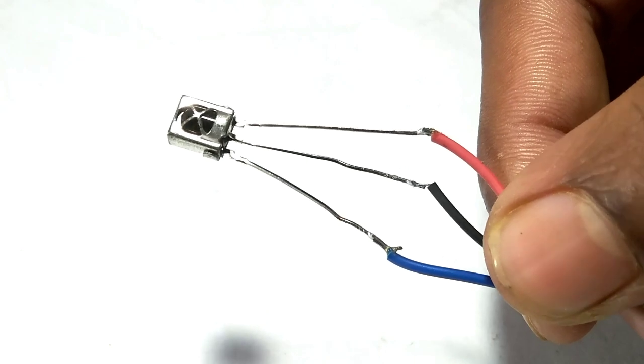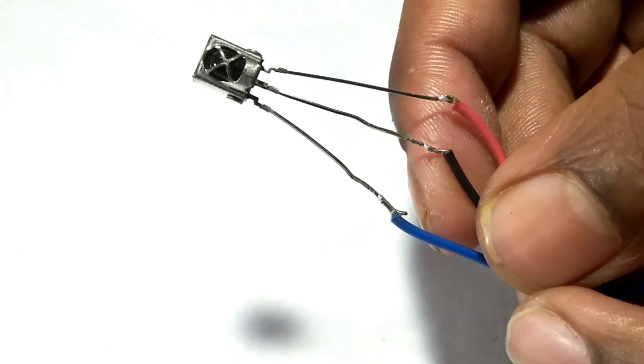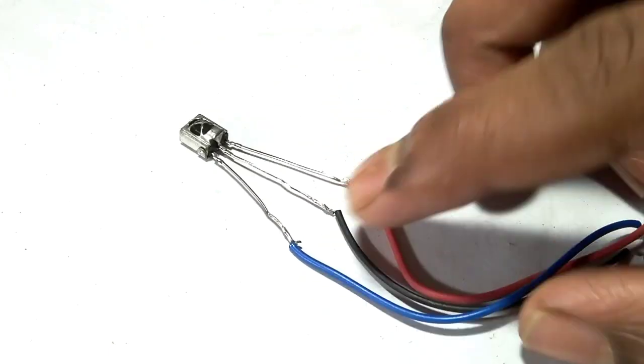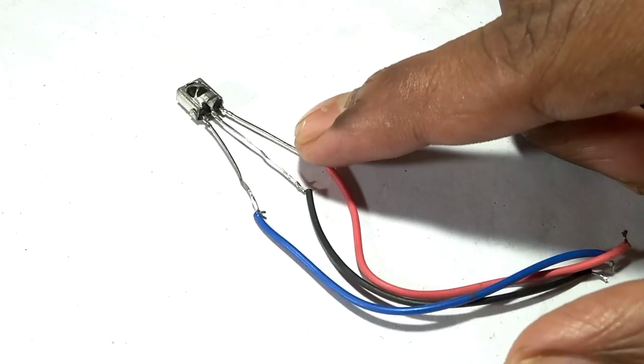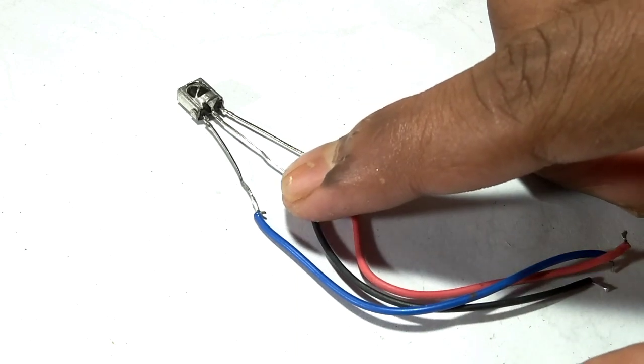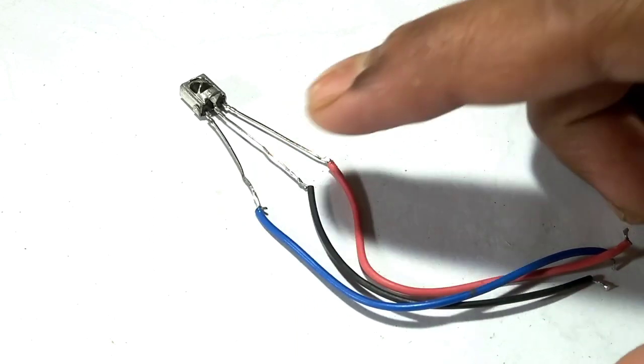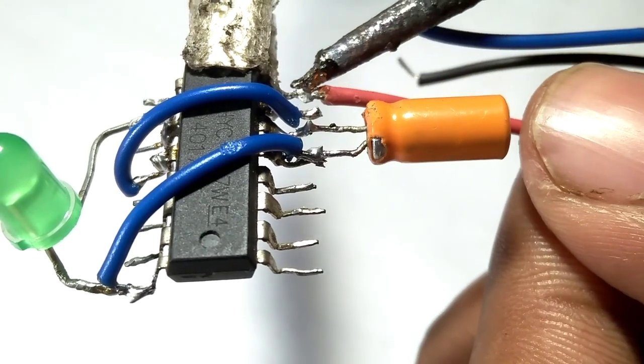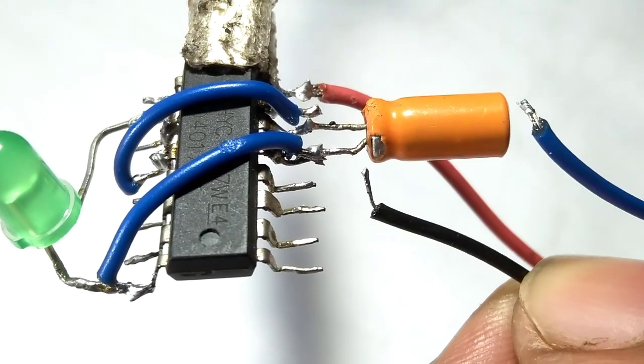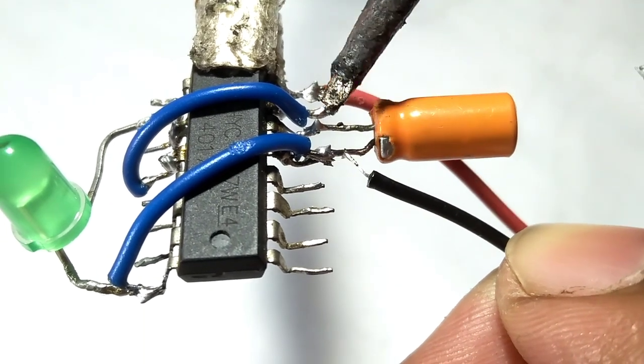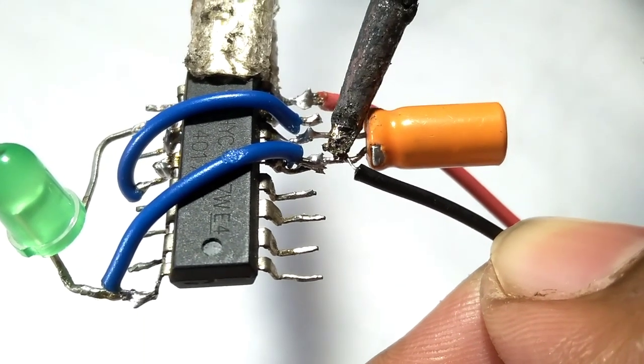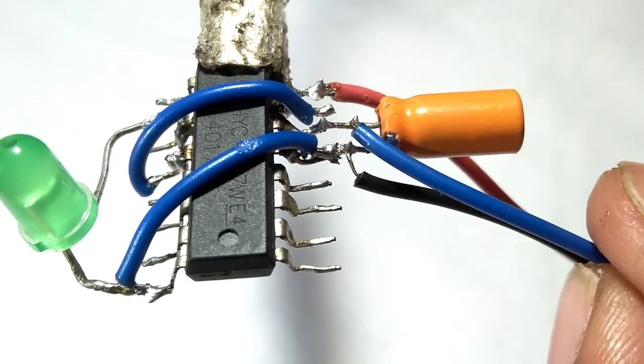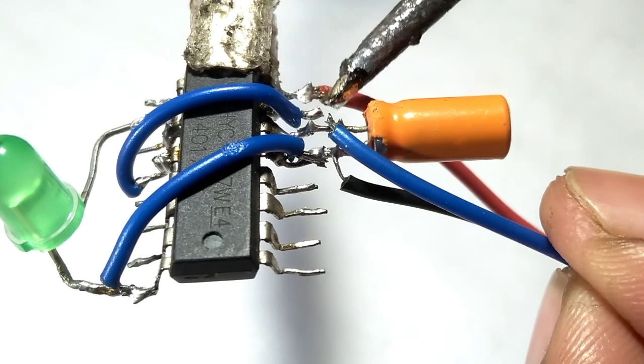And then I connect the IR receiver. As you can see, the IR receiver has 3 pins - one pin for positive, one for ground, and one for sensor or output. I connect the positive pin to the IC's pin 16, the ground pin to the IC's pin 8, and the sensor or output pin to the IC's pin 14.